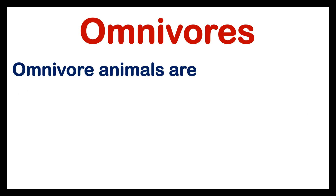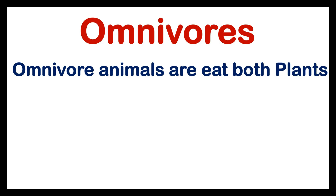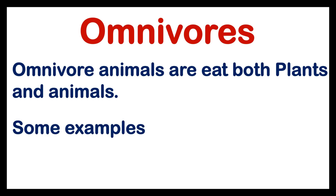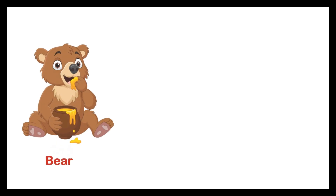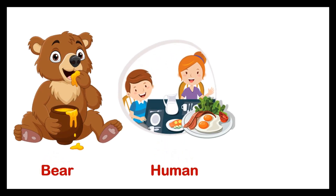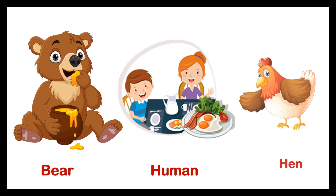Omnivorous. Omnivorous animals eat both plants and animals. Some examples of Omnivorous are Bear, Human, and Pig.